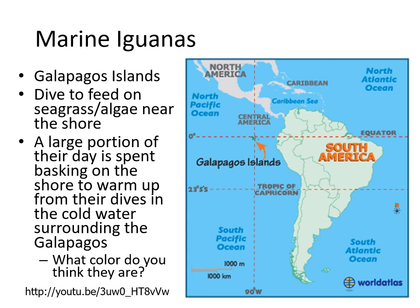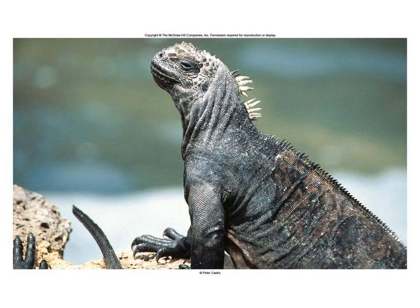Marine iguanas are the only marine lizard and are found only in the Galapagos Islands. They are herbivorous, feeding on seagrass and algae near the shore in the subtidal zone. They spend a lot of their time basking in the sun and are generally darker in color, absorbing thermal energy to dive into cold water to feed. They are very similar to other iguanas except they swim, dive, and stay near shore. They are relatively tame because they evolved on an island without humans.